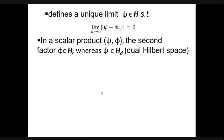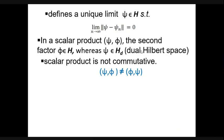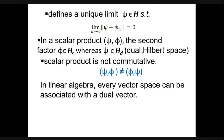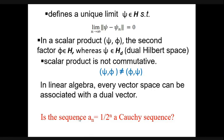In the scalar product (psi, phi), the second factor phi belongs to the Hilbert space, whereas the first factor belongs to the dual Hilbert space. These two spaces are like twins. The scalar product is not commutative: (psi, phi) is not equal to (phi, psi). In linear algebra, every vector space can be associated with a dual vector space, so for any vector there is a corresponding vector belonging to the dual Hilbert space. You can try proving whether the sequence a_n equals (1/2)^n is a Cauchy sequence yourself.